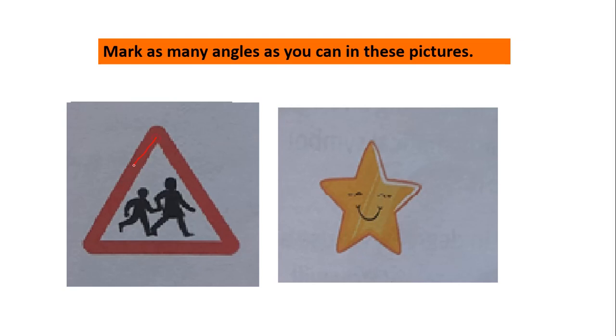Imagine this as one ray. This as another ray. Both together meet at this point. This point will become vertex. So to represent the angle between this we will mark like this. I will mark this one as the first angle.